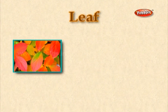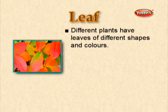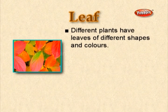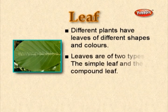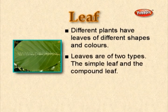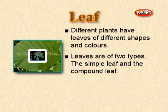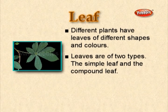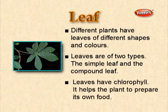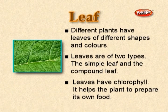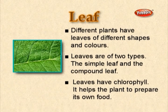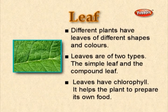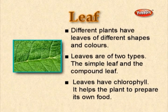The leaf: Different plants have leaves of different shapes and colors. Leaves are of two types — the simple leaf and the compound leaf. Leaves have chlorophyll, which helps the plant to prepare its own food.